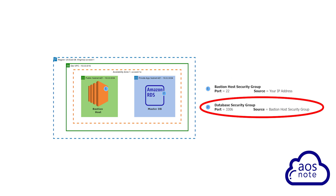The second security group you need is the database security group, and this is the security group you will attach to the RDS database. On this security group, you will open the port for your RDS database engine. For example, in this project, the database engine is MySQL, so we will open port 3306 and only allow traffic from this port if it is coming from the bastion host security group.